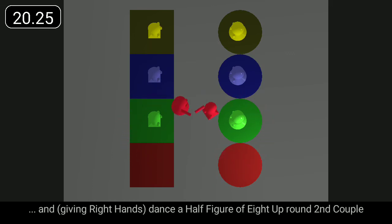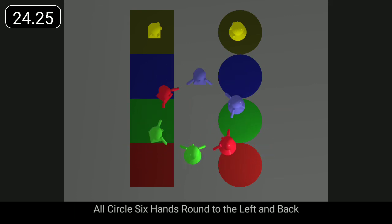and dance a half figure of eight up round second couple. All circle, six hands round to the left and back.